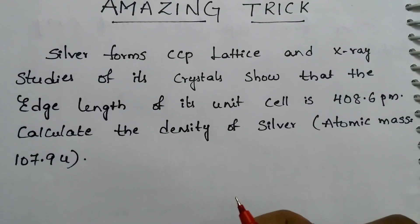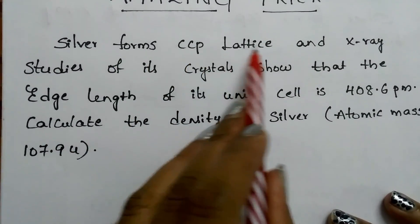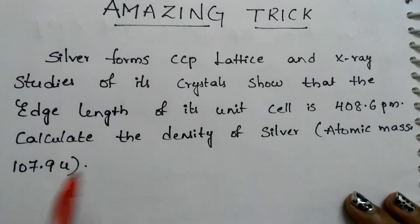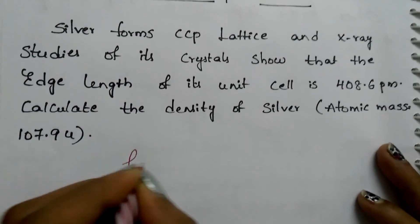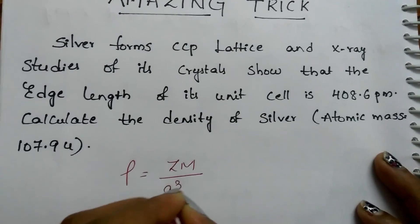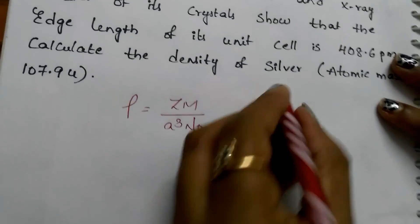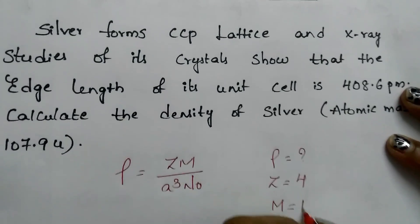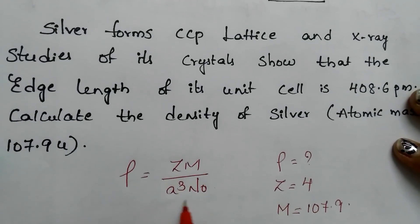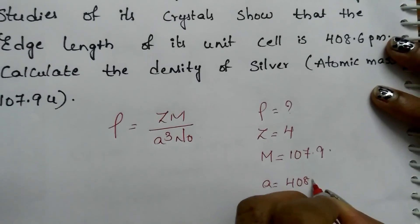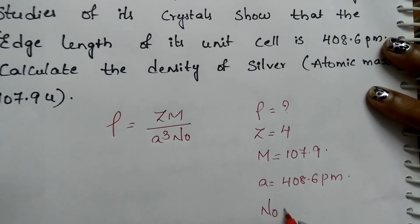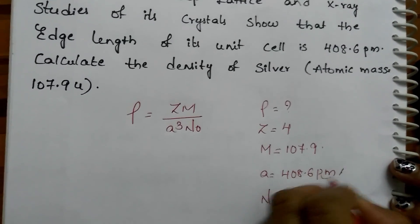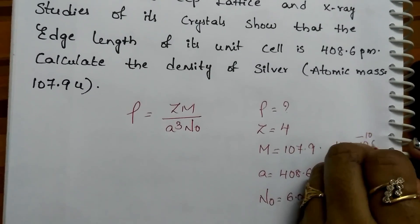See, this is one of the density-related problems: Silver forms a CCP lattice, and X-ray studies of its crystal show that the edge length of its unit cell is 408.6 picometers. Calculate the density of silver. The atomic mass is given. We know that rho equals z times m divided by a-cubed times N-naught, where rho is density (to find), z for CCP is 4, mass is 107.9, a is 408.6 picometers, and N-naught (Avogadro's constant) is 6.023 × 10²³. Convert picometers into centimeters: 1 picometer equals 10⁻¹⁰ centimeters.